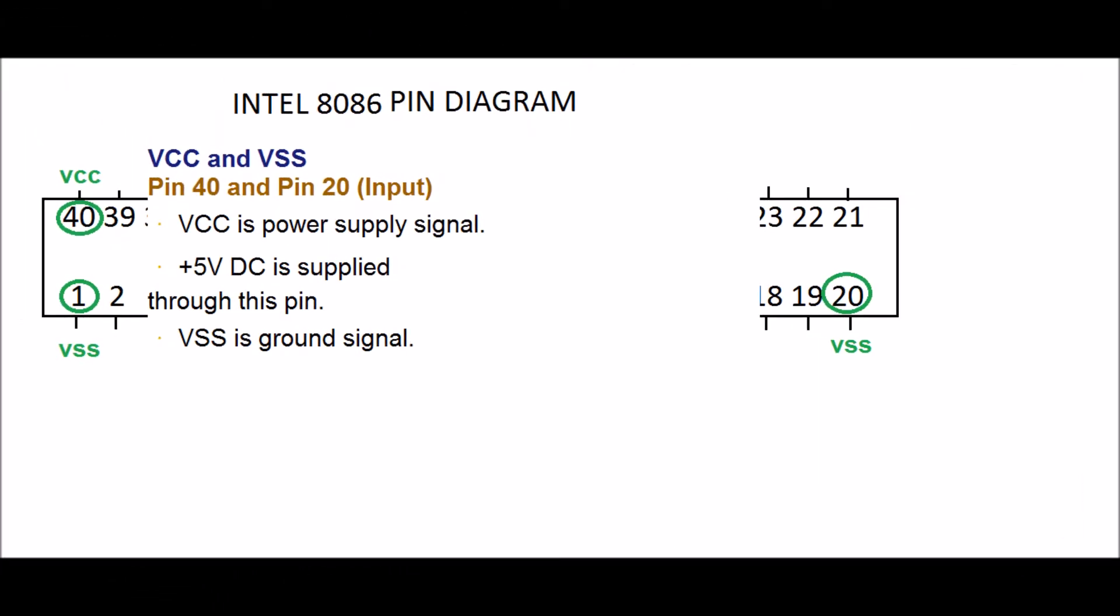PIN 20 and PIN 40, PIN 1 and PIN 20 are ground pins. VSS is ground signal. These pins are input pins of the microprocessor. It means these pins are connected to the negative terminal and it is represented by VSS.